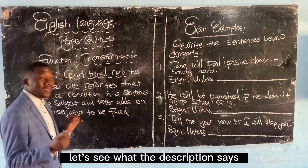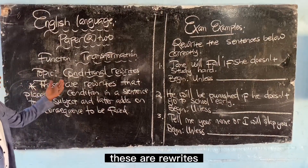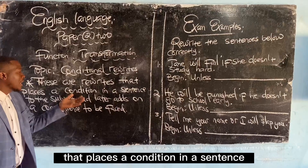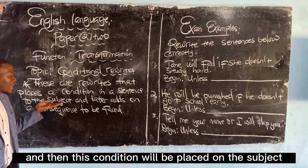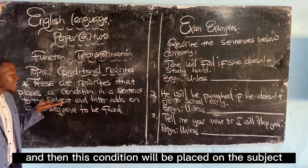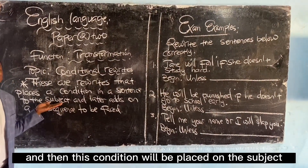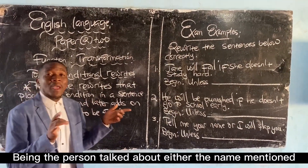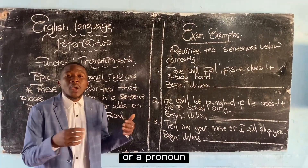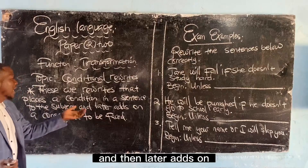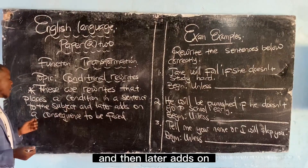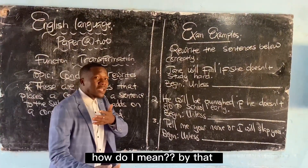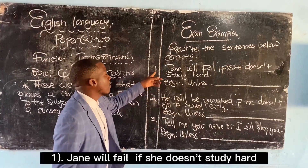Let's see what the description says. These are rewrites that place a condition in a sentence, and then this condition will be placed on the subject — being the person talked about, either the name mentioned or a pronoun — and then later adds on a consequence to be faced. Let's see number one.